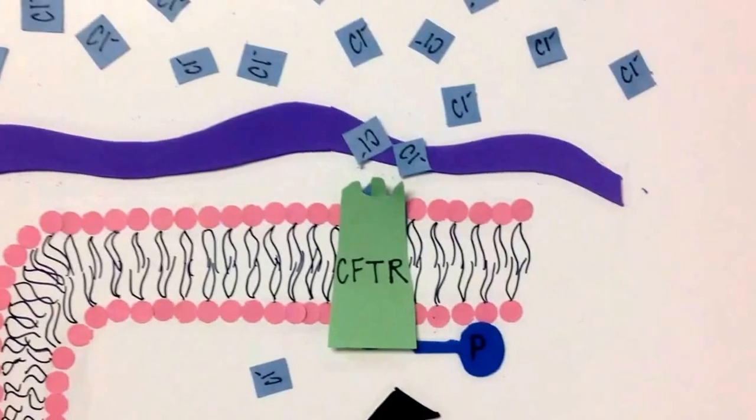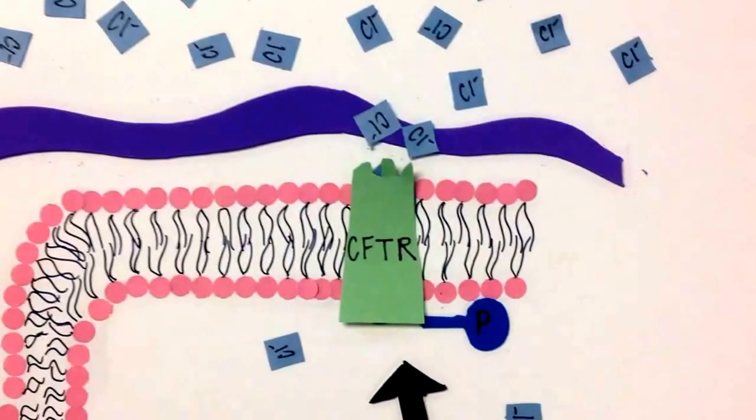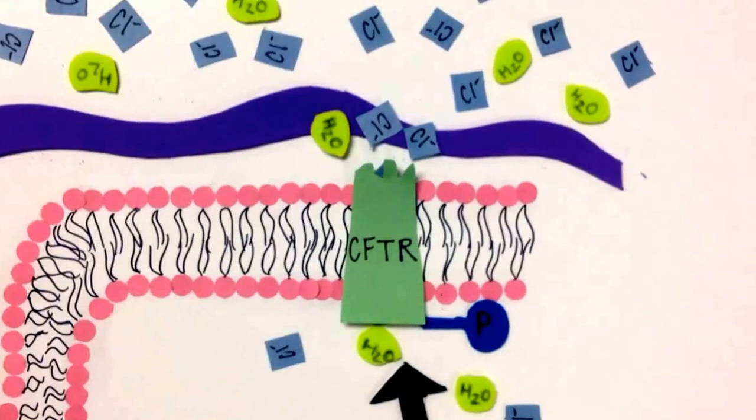With an increased supply of cyclic AMP, chloride ions are being pumped out of the cells, causing water to follow the ions down the concentration gradient.